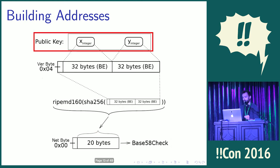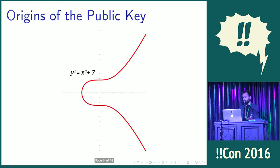The first step in this process is to start with a public key. Where does the public key come from? It comes from an elliptic curve — and not just any elliptic curve. Of all the elliptic curves in the world, they picked y² = x³ + 7, which is pretty amazing because it seems so simple.